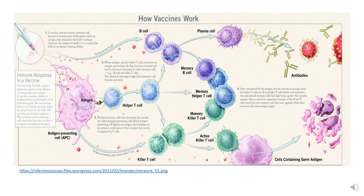The helper T cell also activates other kinds of cells. These cells include killer T cells, and these killer T cells can get activated and perform multiple functions, including killing infected cells.